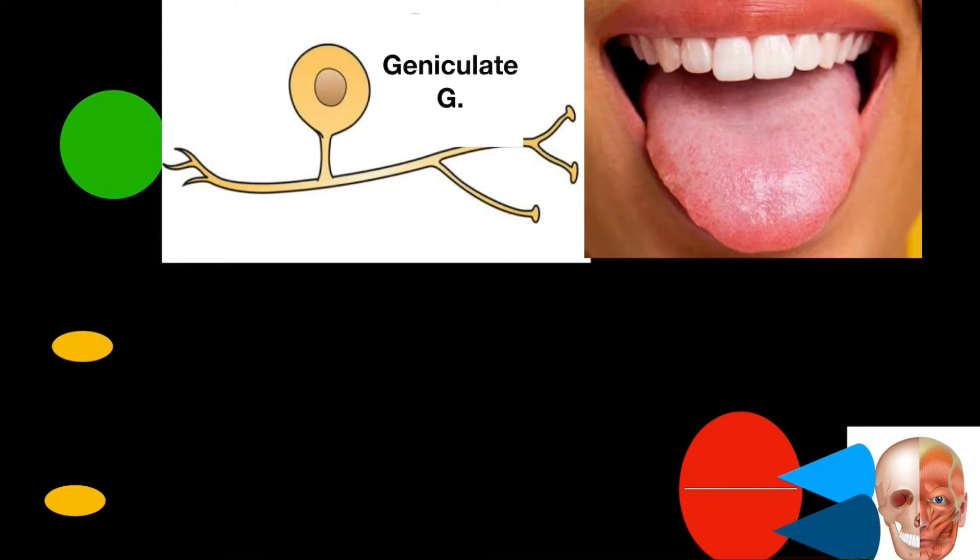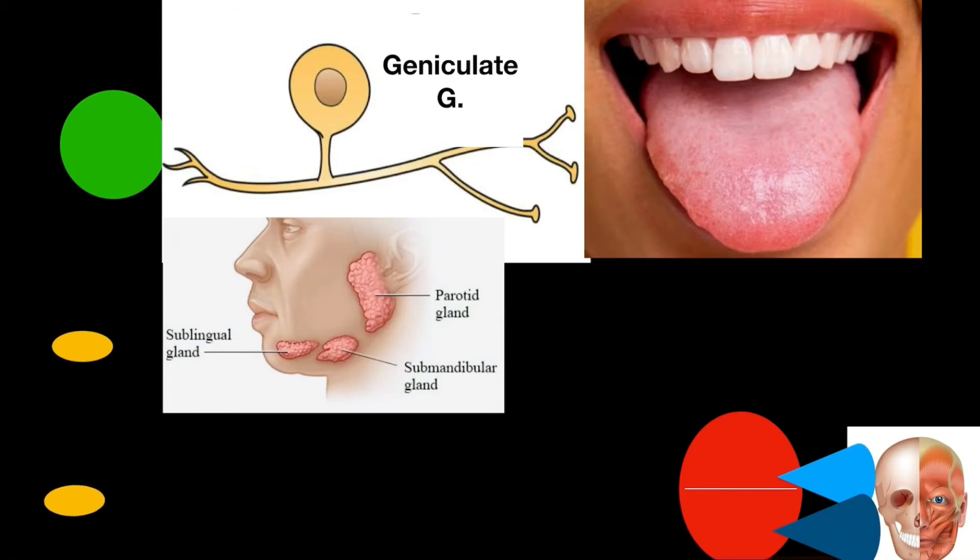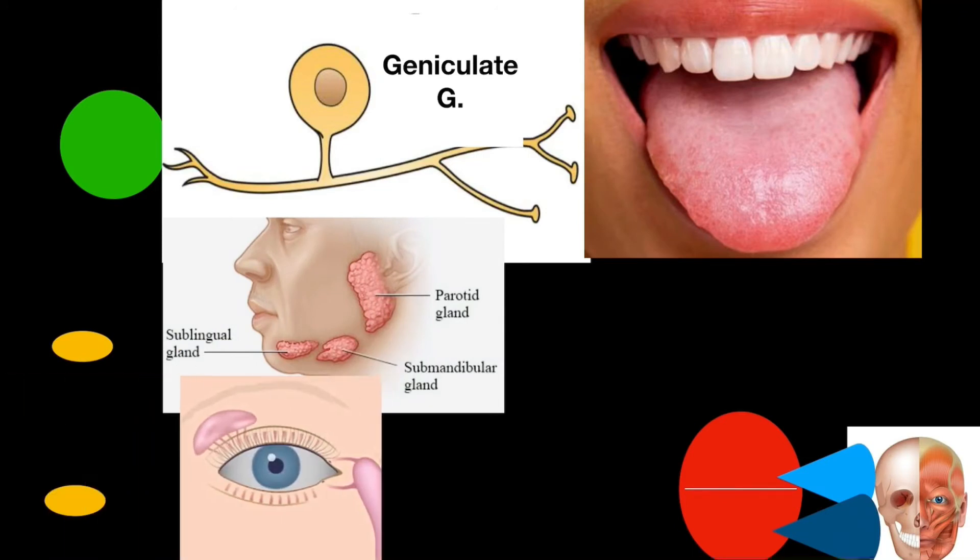Coming to the two parasympathetic nuclei. The superior salivatory nucleus supplies submandibular and sublingual salivary glands and the lacrimal nucleus supplies lacrimal gland.